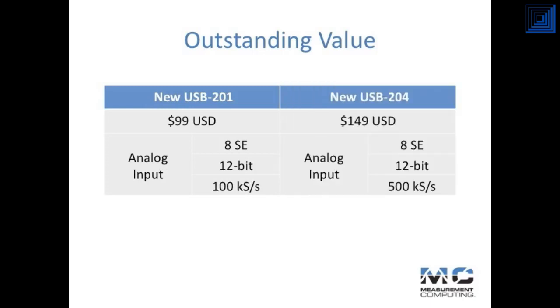For $50 more, the USB 204 offers the same 8 channels of 12-bit single-ended analog input, but ups the maximum aggregate sampling rate to a whopping 500 ks per second.